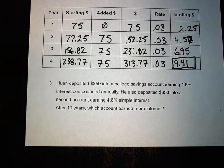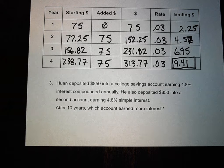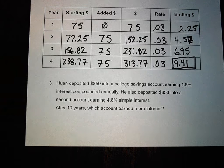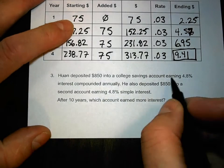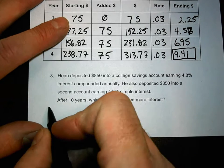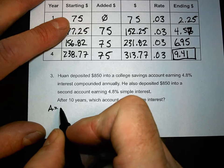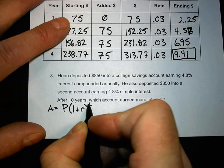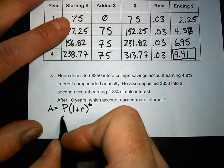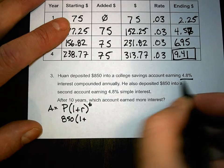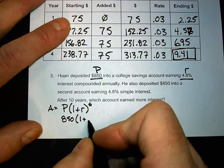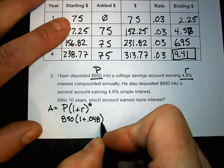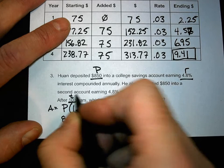Let's look at this one: $850 deposited into a college savings account earning 4.8% interest compounded annually, and also $850 into a second account earning 4.8% simple interest. After 10 years, which account earned more interest? The compound interest formula is A equals P times one plus R to the power of T. Let's fill in the parts — P is 850.